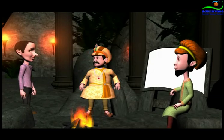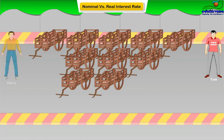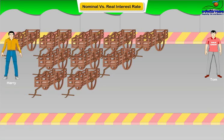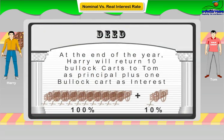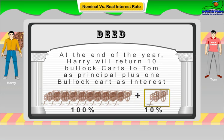Let's take an example. Imagine that a bullock cart owner, Tom, agreed to lend ten bullock carts to his neighbor Harry for an entire season. The condition of the loan is Harry would return eleven bullock carts at the end of the year — that is, ten bullock carts (principal) and one bullock cart (interest). This would constitute a one-year loan of a product at an interest rate of ten percent.